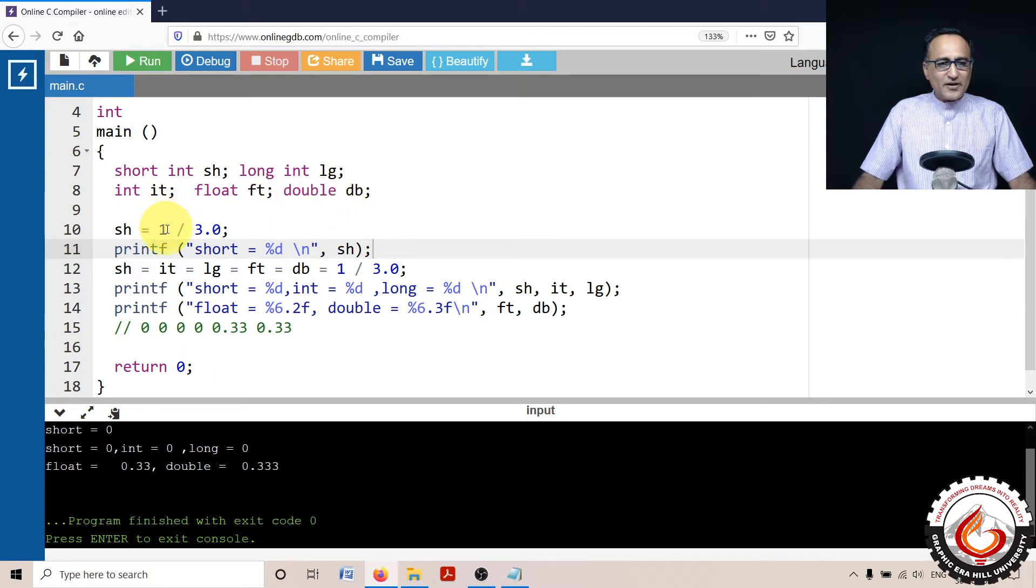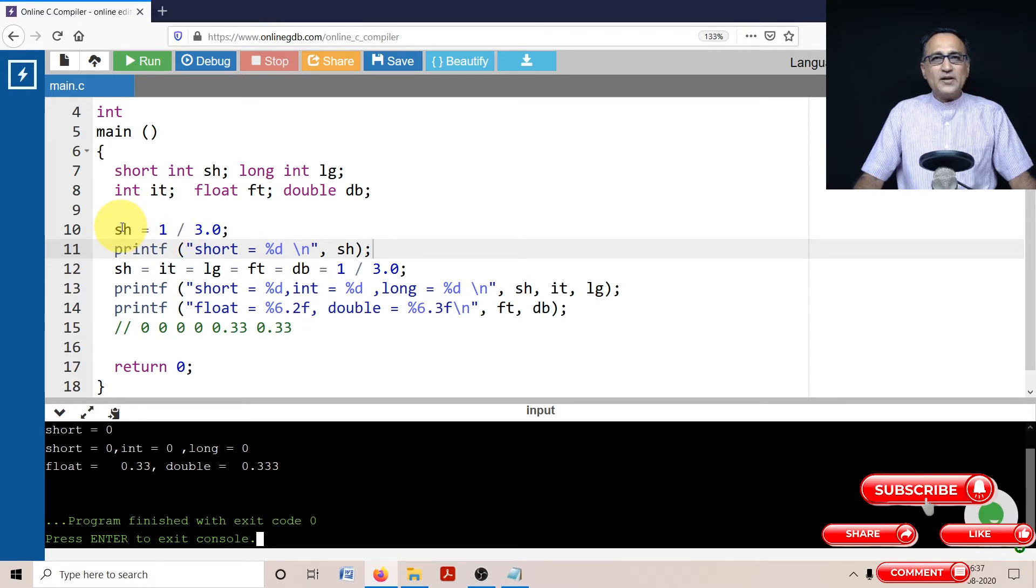I have divided 1 by 3.0. When I divide 1 by 3.0, since the denominator is 3.0, the numerator also becomes 1.0. The division result is 0.33, but the left-hand side is only an integer.